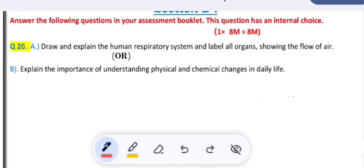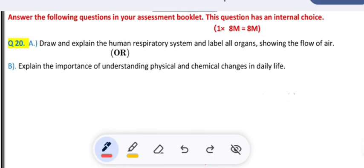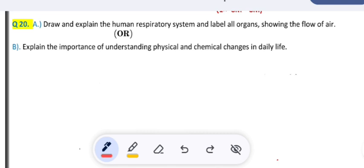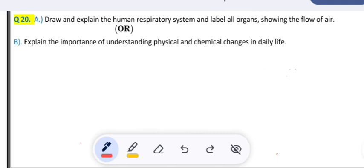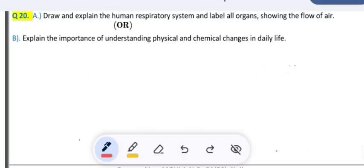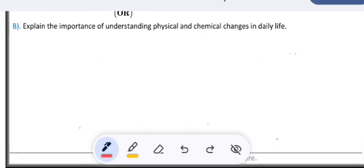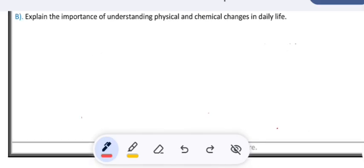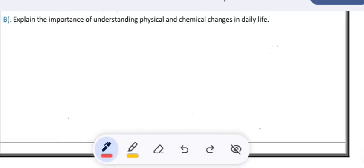Section D: answer the following questions in your assessment booklet. This question has an internal choice. 1 times 8 is equal to 8 marks. Question twenty A) draw and explain the human respiratory system and label all organs showing the flow of air, OR B) explain the importance of understanding physical and chemical changes in daily life. So this is the complete question paper prepared and brought before you.